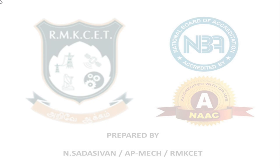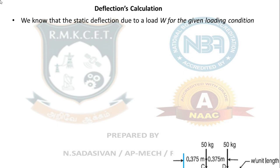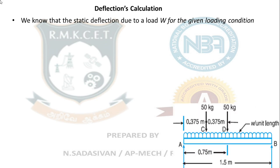Now calculate the deflections due to the two loads and then due to the self-weight. The static deflection due to a point load W for a simply supported beam is given by: δ = W·A²·B² / (3·E·I·L). This comes from strength of materials fundamentals.